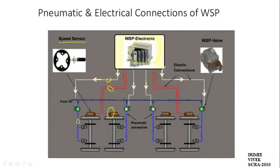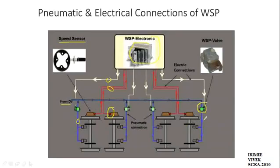Based on these speed inputs, the microprocessor control unit provides instructions to the anti-skid valve. The anti-skid valve has an exhaust port and it is operated with the aid of a solenoid. It is placed between the connection of the distributor valve and the brake cylinder. Based on the instructions provided, the anti-skid valve regulates brake cylinder pressure.